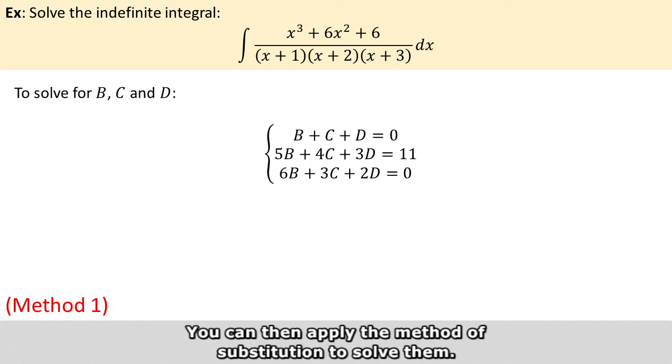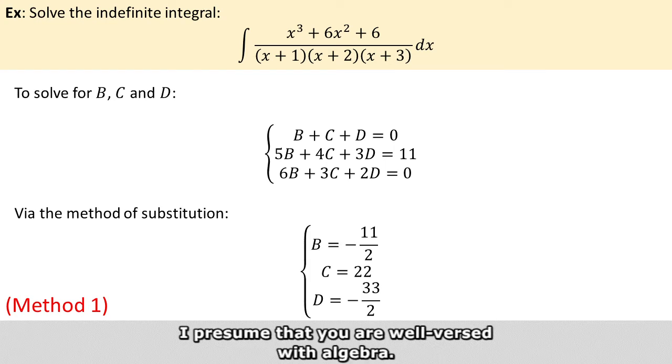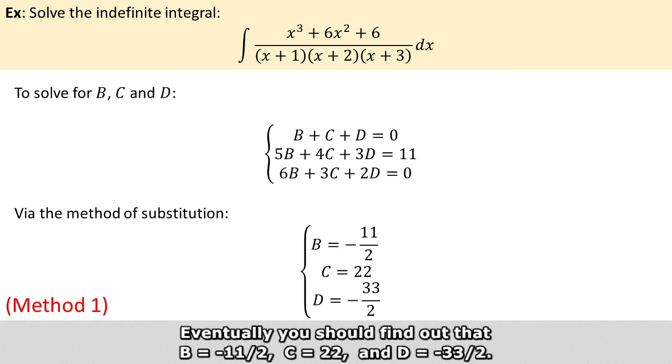You can then apply the method of substitution to solve them. I presume that you are well-versed with algebra, so eventually you should find out that B equals negative 11 over 2, C equals 22, and D equals negative 33 over 2.